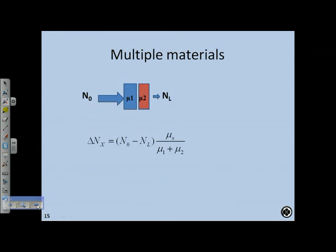For a material composed of two different substances, the number of photons exiting through total thickness L is computed using the combined attenuation. The change in photons through each sub-thickness uses the respective mu for that material divided by the sum of the mus. This is how attenuation is handled for composite or mixed materials.